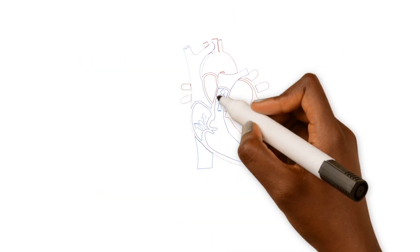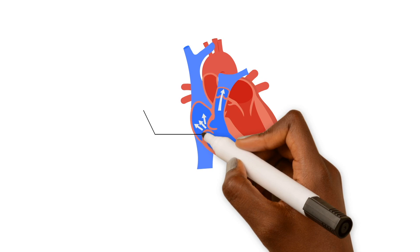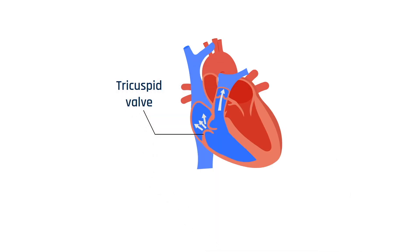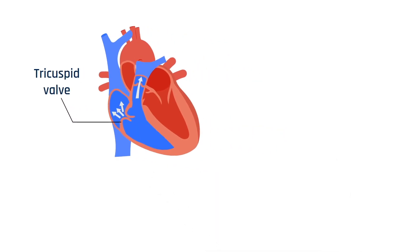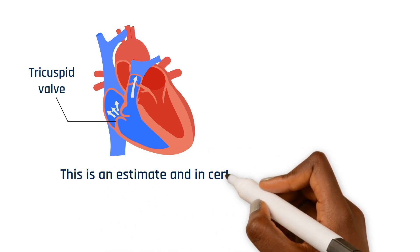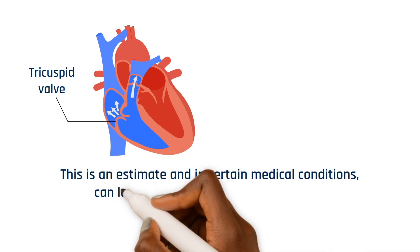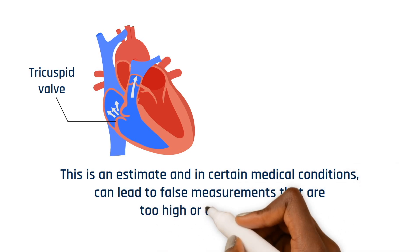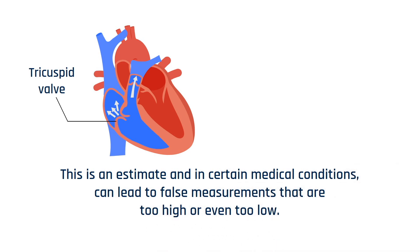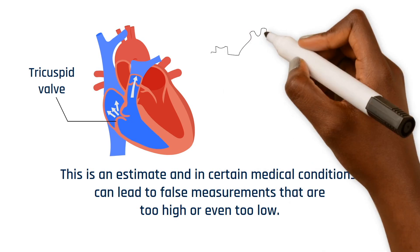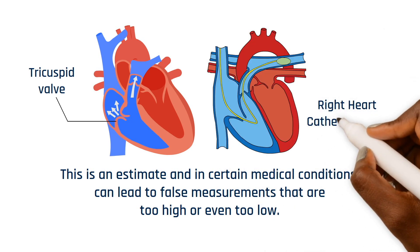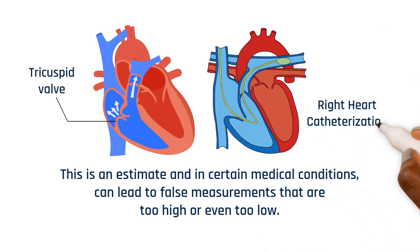The estimated pulmonary arterial pressure is obtained by measuring the regurgitant jet of the tricuspid valve. However, this is an estimate, and in certain medical conditions can lead to false measurements that are either too high or even at times too low. Depending on those measurements, a more confirmatory analysis is obtained by performing a right heart catheterization.